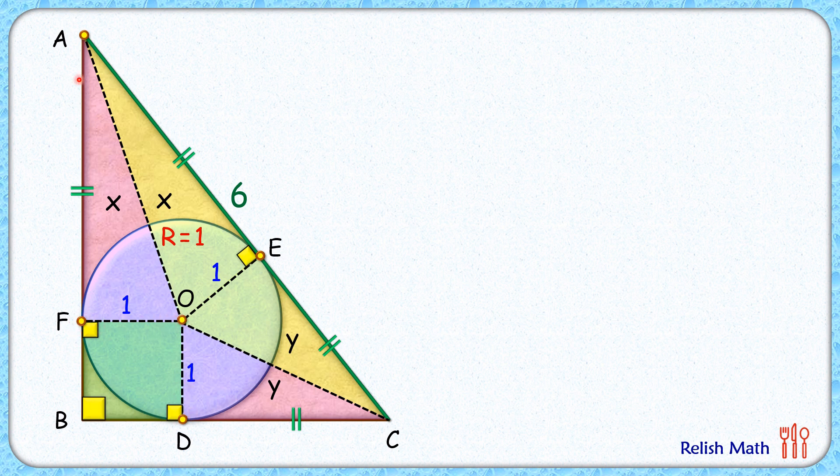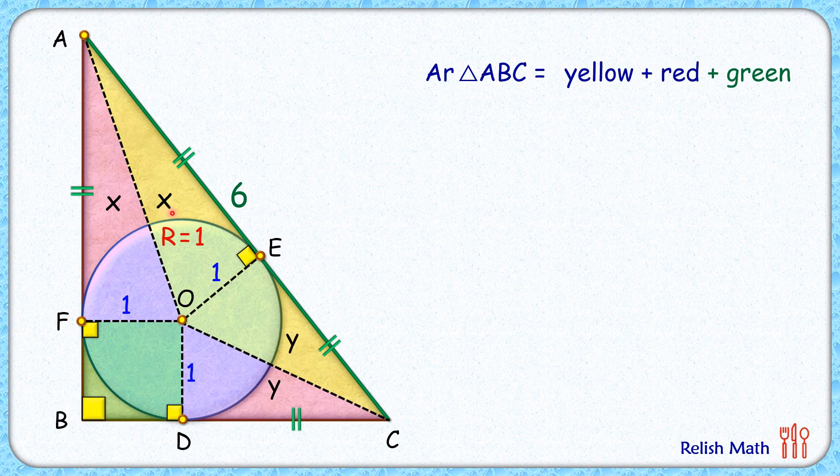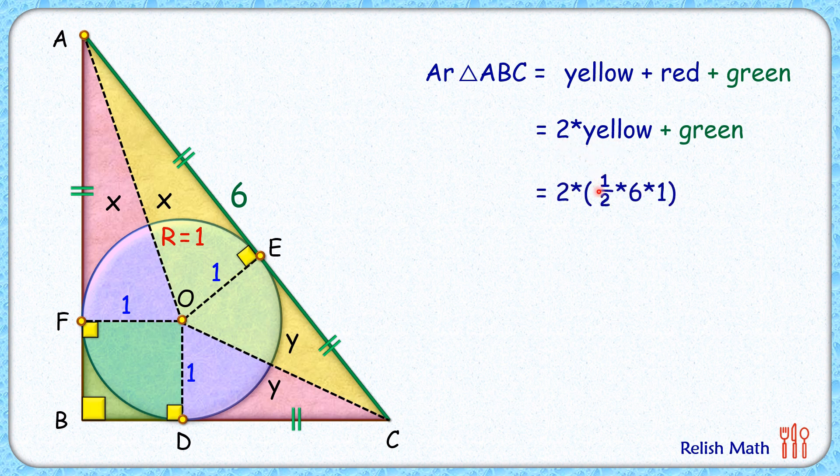So we can say that area of triangle ABC which we have to find is nothing but total area of yellow region plus total red region area plus this green region area. Now here yellow region area is x plus y, red region area is also x plus y, so we can say that yellow and red region areas are equal to each other. So area of triangle ABC is two times of yellow area plus green area. And yellow area if you'll see, its base is 6 cm and height is 1 cm, so this area is 2 times half of base into height. And green region is a square, its area will be 1 cm². Solving it, we'll get area of triangle ABC as 7 cm².